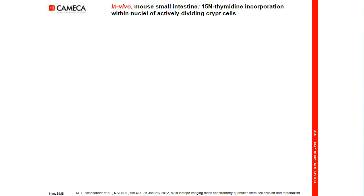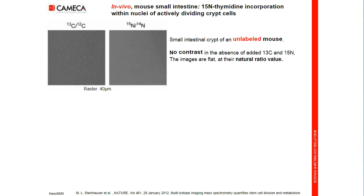Now, an in vivo test on mouse small intestine. First, on an unlabeled mouse, on a small intestinal crypt, we see no contrast in either the nitrogen-15 over nitrogen-14 or the carbon-13 over carbon-12 images. The images are flat and can be measured quantitatively at the natural abundance ratio.